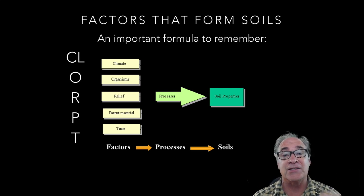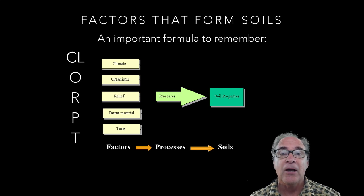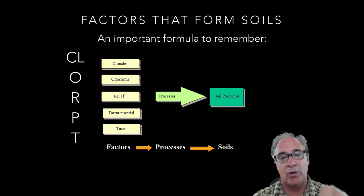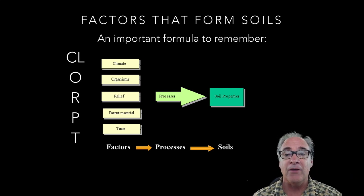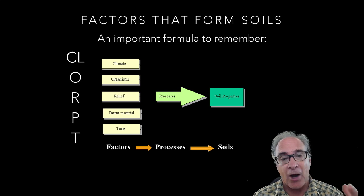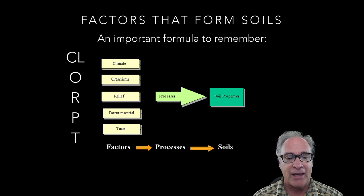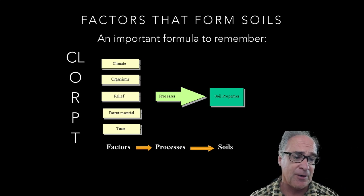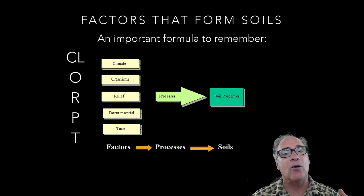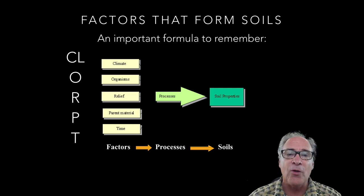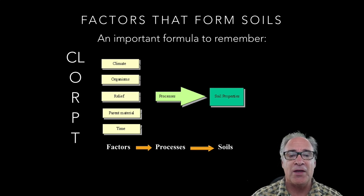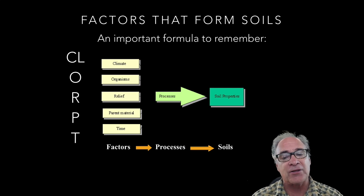CL is climate. O is organisms. R is relief or topography — the shape of the land. P is for parent material, and T of course is for time. Those five factors affect the process.